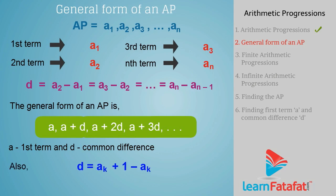Also, D is given by the formula Ak plus 1 minus Ak, where Ak plus 1 and Ak are the k plus 1th and kth terms.